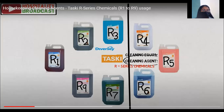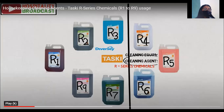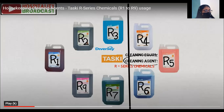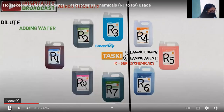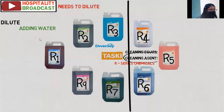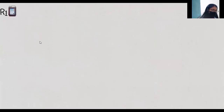As you know, there are different types of agents which we use in the housekeeping department. Their names are R1, R2, R3, R4, R5, R6, R7, and R9. They are segregated into two groups: R1, R2, R3, R7, and R9 come in the first category, and R4, R5, and R6 come in the second category. R4, R5, and R6 are ready-to-use chemicals, meaning you need not add water.